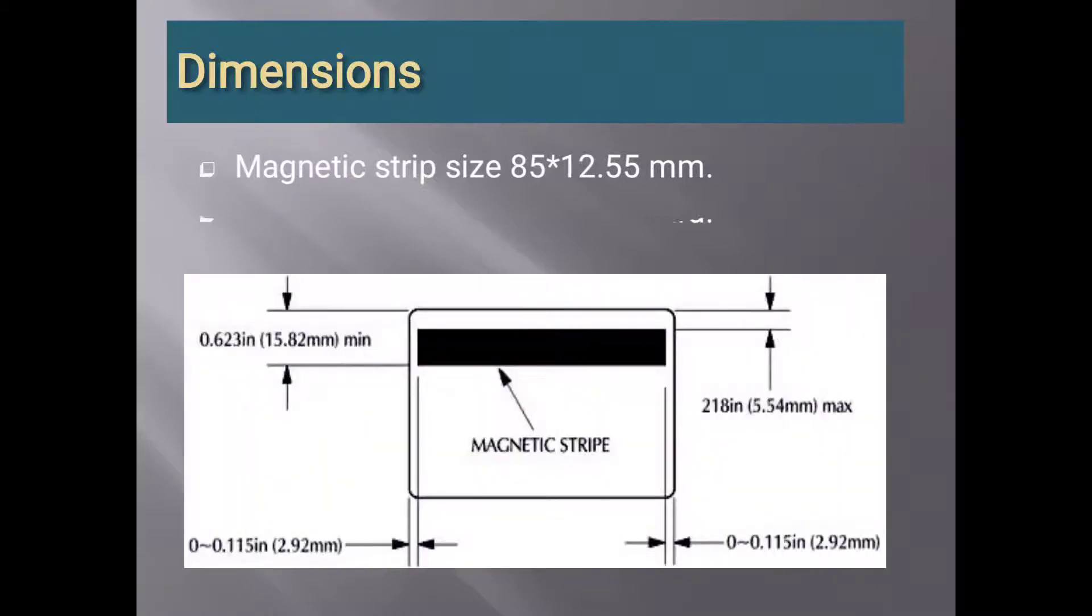Up next is dimensions of card. The magnetic strip size is 85 by 12.55 mm. The position from the top of the card of the strip is up to 4.5 mm, as you can see in the picture.